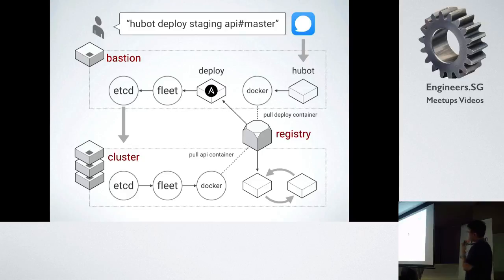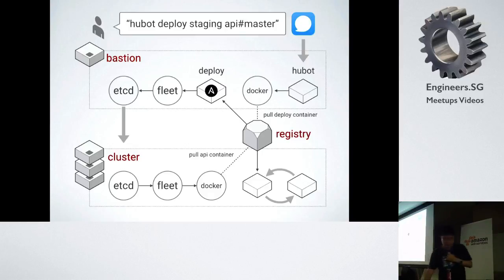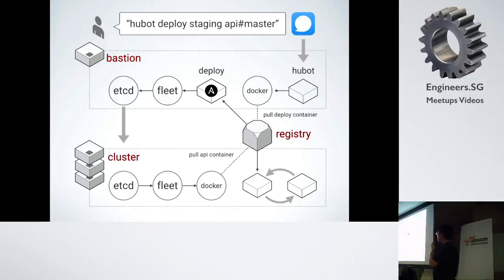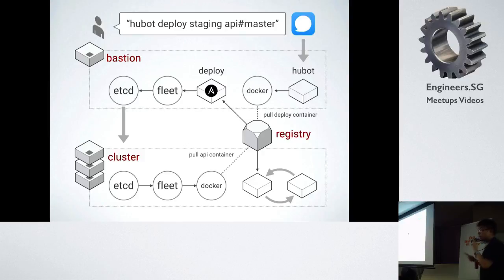This is the entire process. Whenever we want to kick off a new deploy, we actually modify our own Py chat application — this coordination is done using Hubot. We make use of the bot, which receives commands through chat, and then it notifies Docker to pull the deploy container from the registry. Everything is containerized. We have a deploy system which uses Ansible to run a series of commands. We notify the cluster that we need to deploy a new build, and this is synchronized across the entire cluster, which pulls the new container from the registry and switches up the API with the new version.